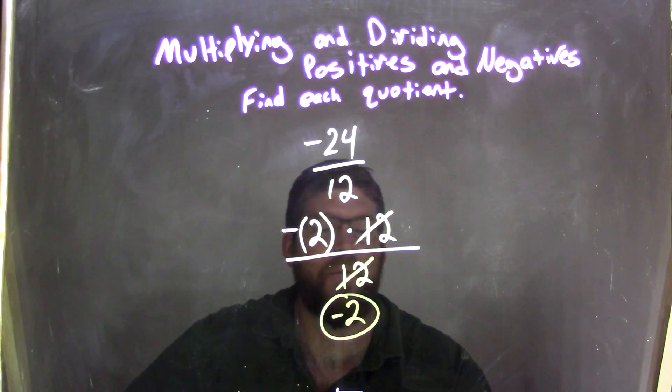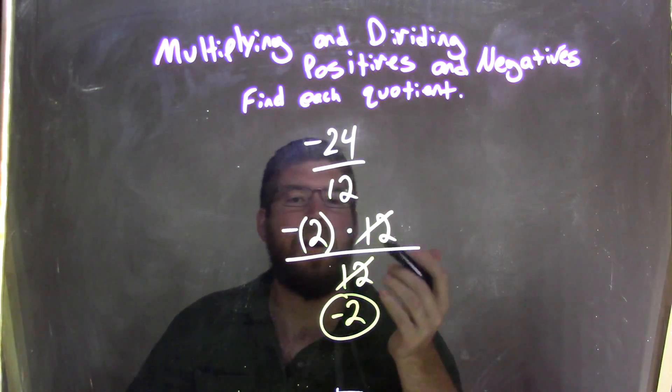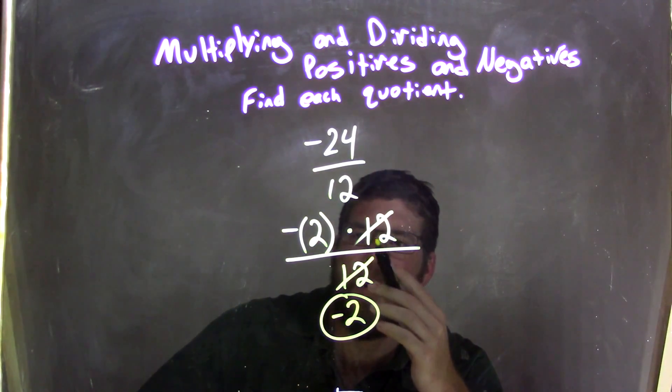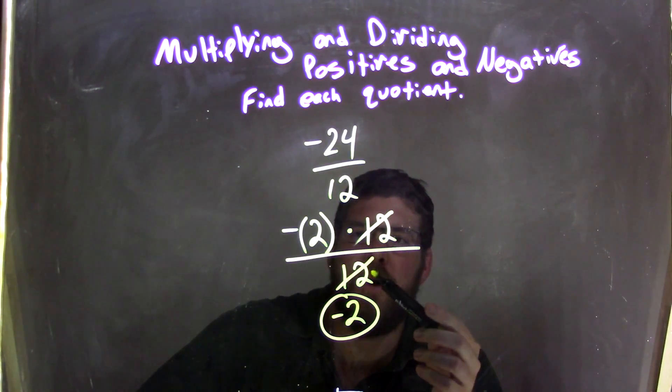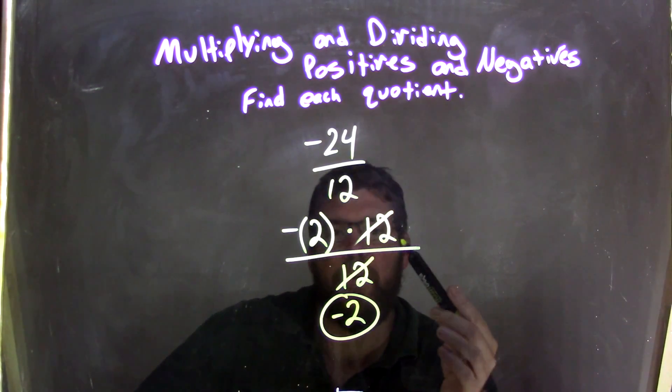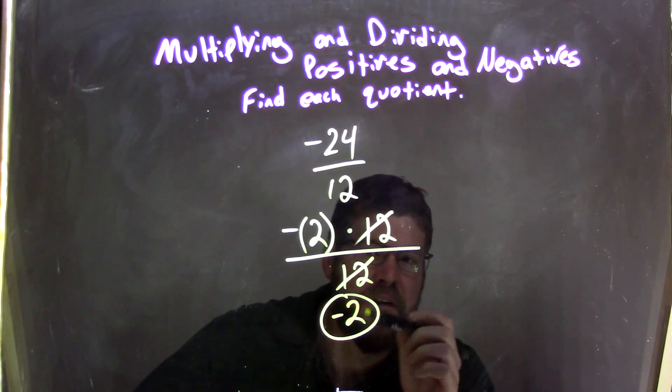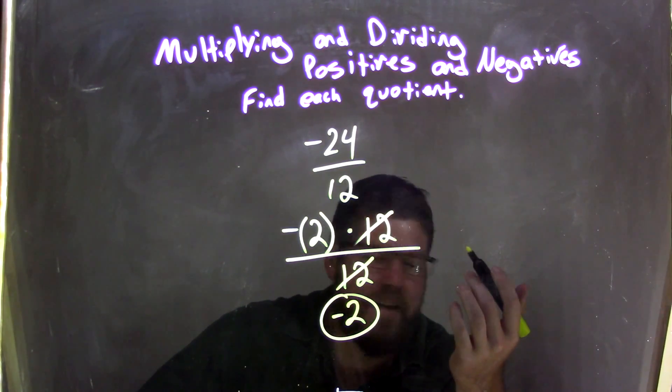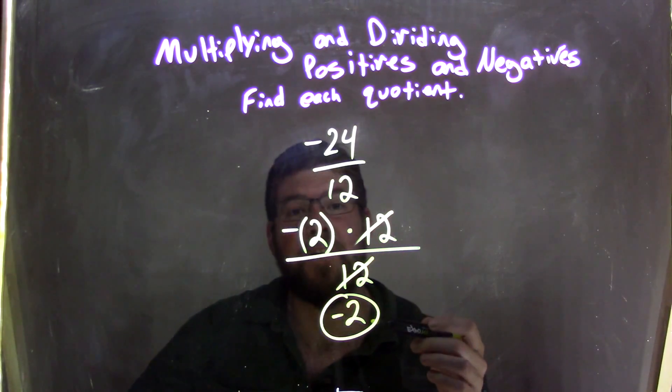So again, let's recap. We start with negative 24 over 12. Negative 24 can be written as negative 2 times 12. Now, 12 and 12 can cancel, and we're left with just the negative 2 in the numerator. We don't put anything in the denominator because it's just a 1 that's left over, and negative 2 divided by 1 is just negative 2. That's our final answer.